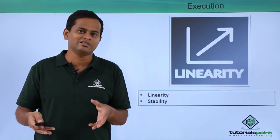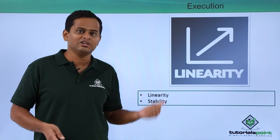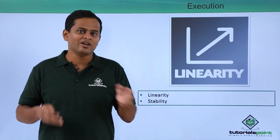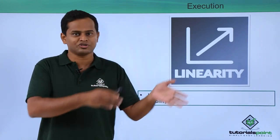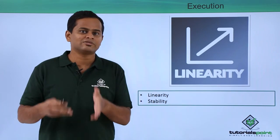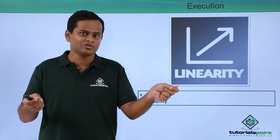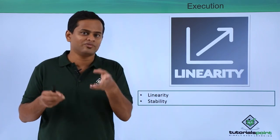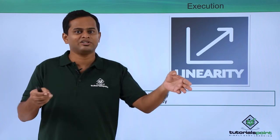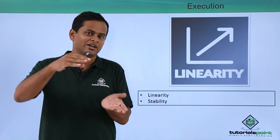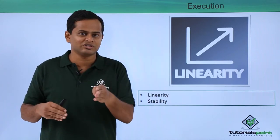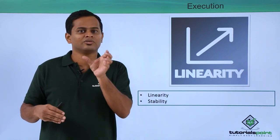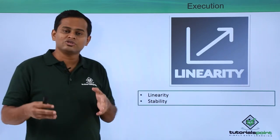The fourth and fifth steps of measurement system analysis are linearity and stability. Linearity means whether we have error in a similar proportion across the entire range. For example, if you have a vernier caliper and the error at 5 mm is 0.5 mm, then when you increase to 10 mm, the linearity error should be less than 1 mm — proportionate to the error encountered at the lower range.